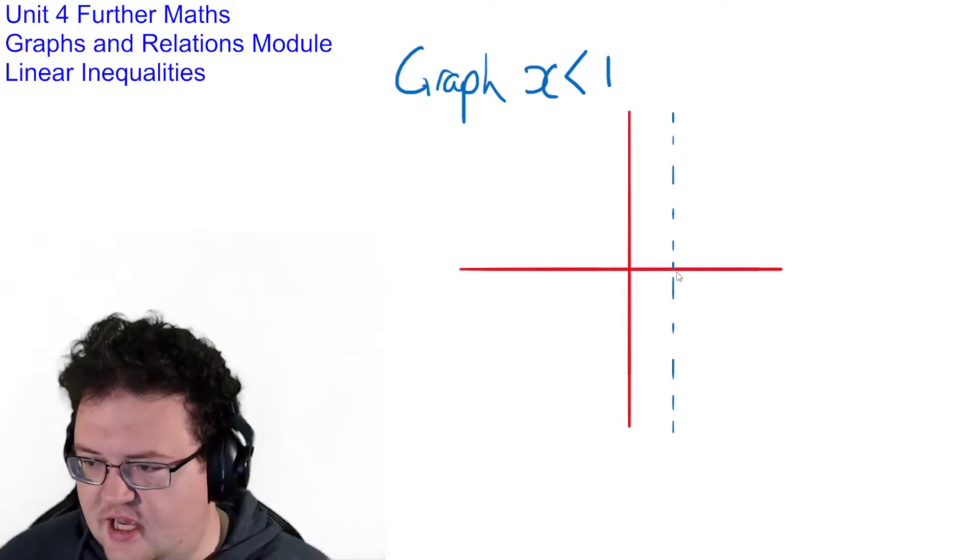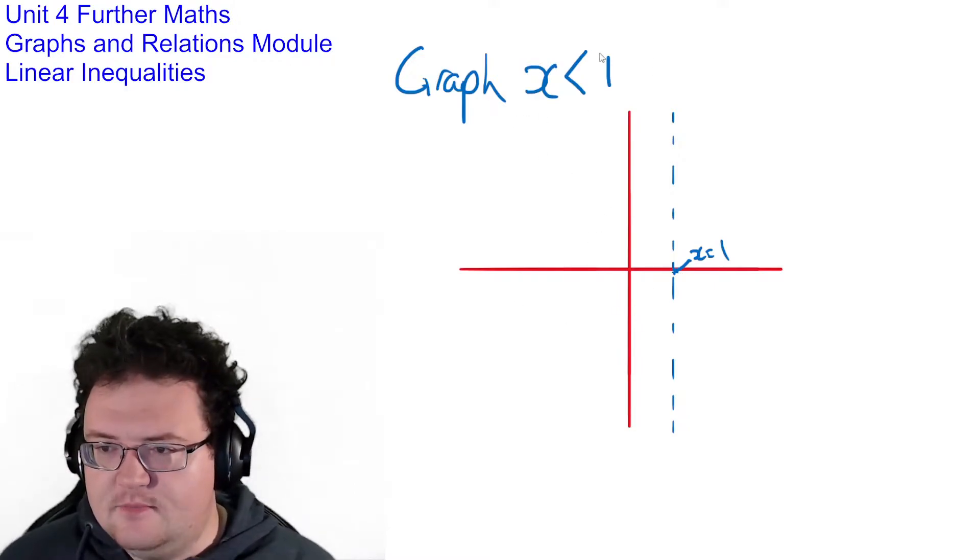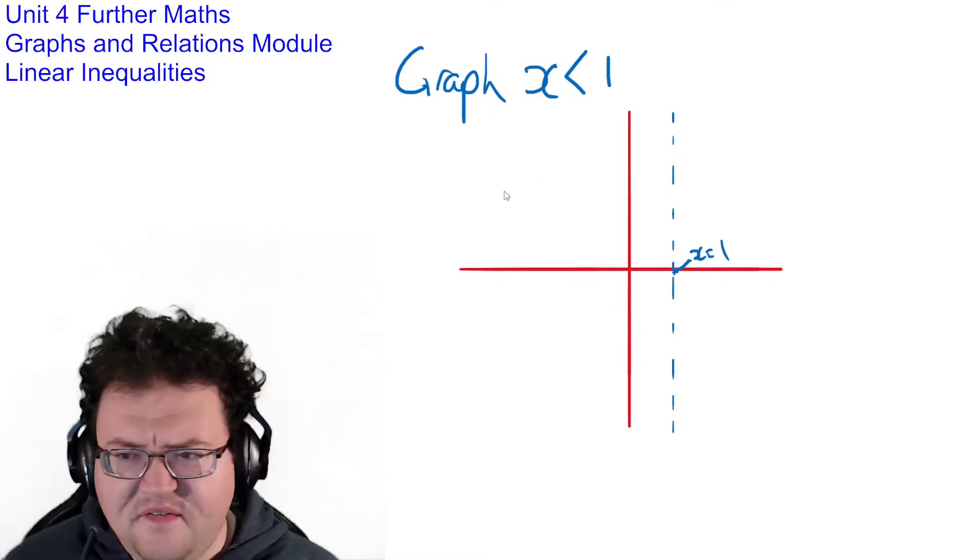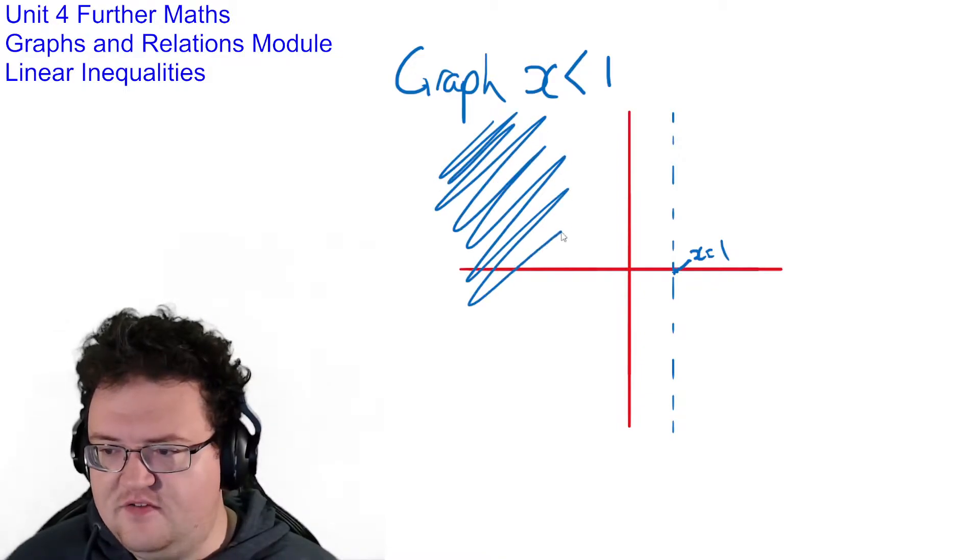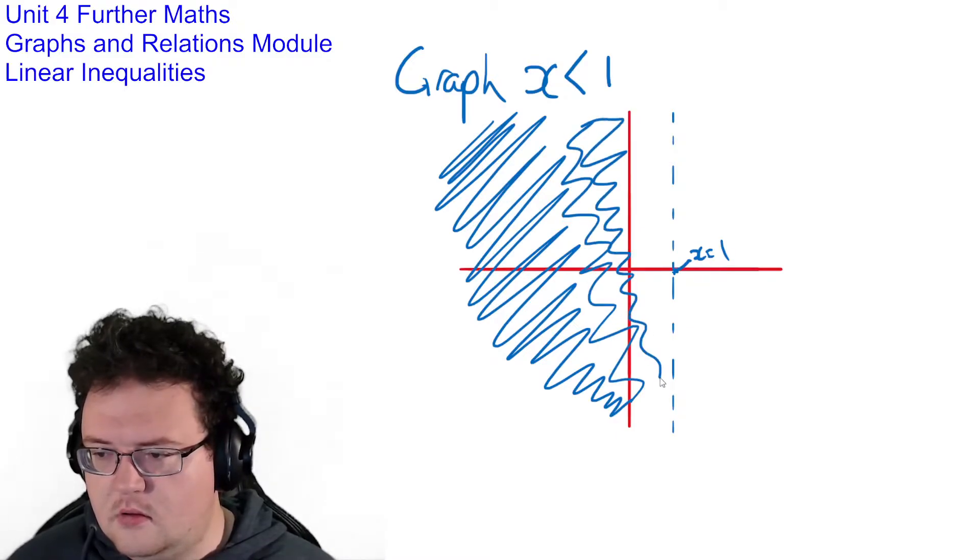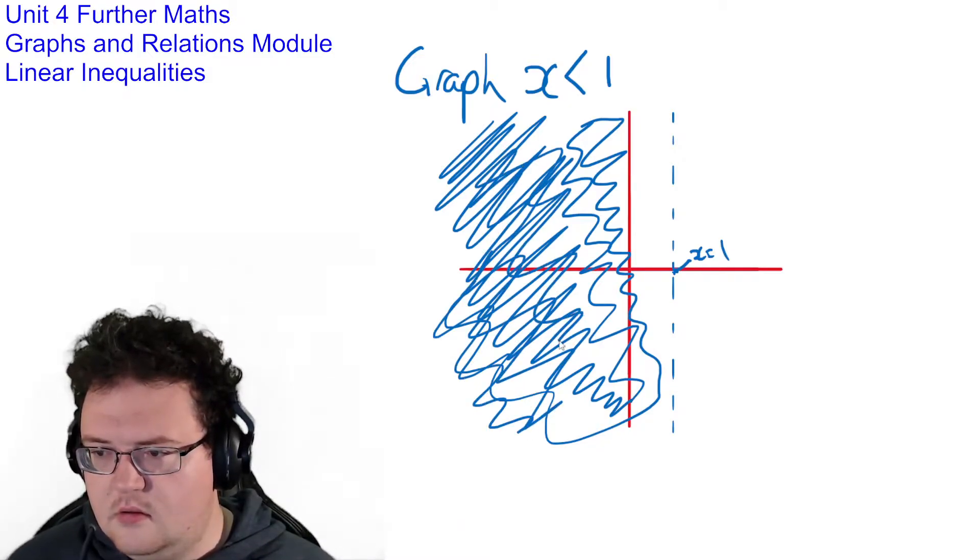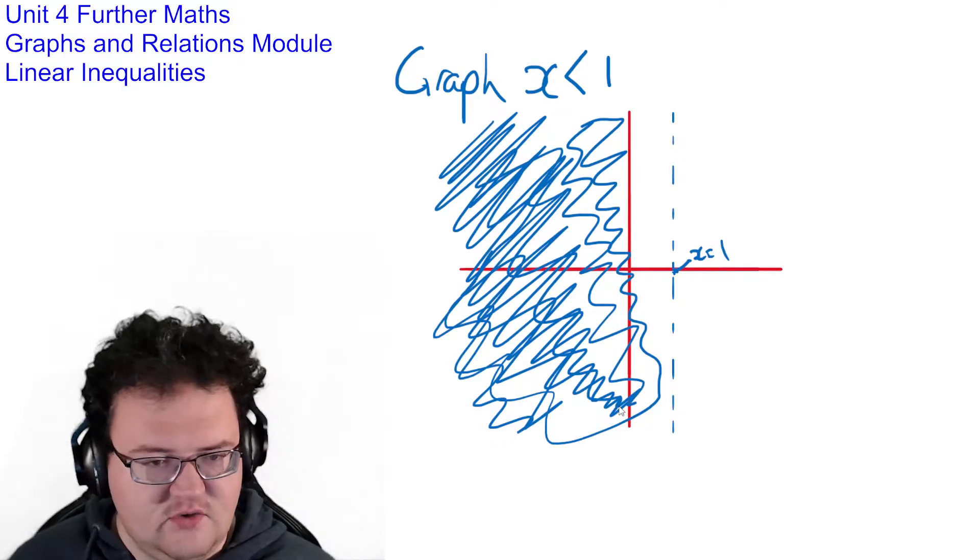So this here, that point there is x equals 1. Now when we graph these, what we have to do is we have to then shade everything beyond it in the correct direction.